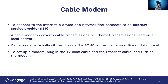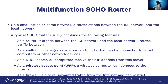Cable modems: to connect to the internet, a device first connects to an internet service provider (ISP). A cable modem converts cable transmissions to Ethernet transmissions used on a local network. 'Modem' stands for modulate/demodulate — it prepares the signal for the coaxial cable that cable companies use. Cable modems usually sit next to your SOHO router inside an office or data closet. To set one up, plug in the TV coaxial cable, connect an Ethernet cable to your router, and power on the modem.